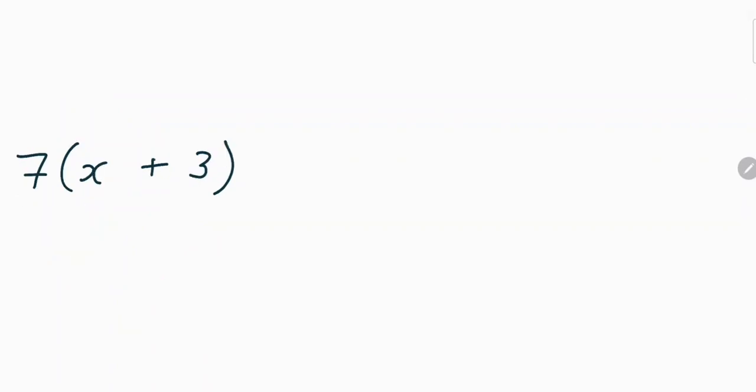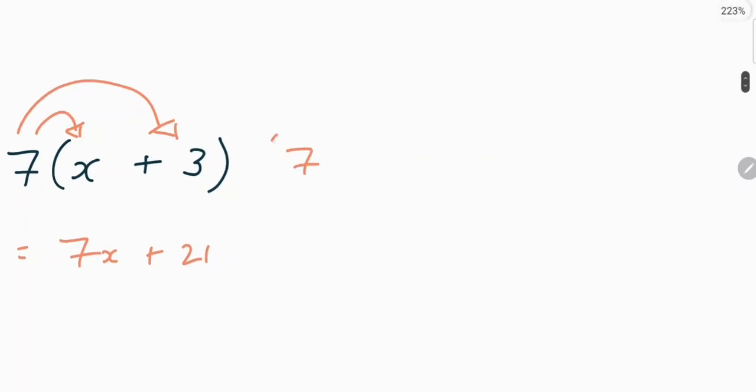Moving on, we have the second question. For this one, it would be 7x plus 21. The reason for this is because we've done 7 times x, which therefore gives us 7x. And we've also done the 7 times the 3 to give us the 21.